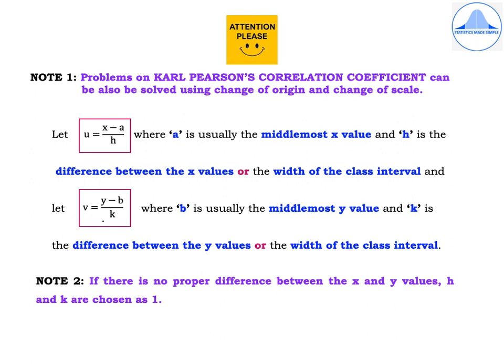In my video correlation part 5, we solved problems on Carl Pearson's correlation coefficient using the direct method, where the formula is in terms of x and y. But when the values of x and y are large — for example, even 3-digit numbers — the calculations become tedious. In this case, Carl Pearson's correlation coefficient can also be solved using the change of origin and change of scale method.